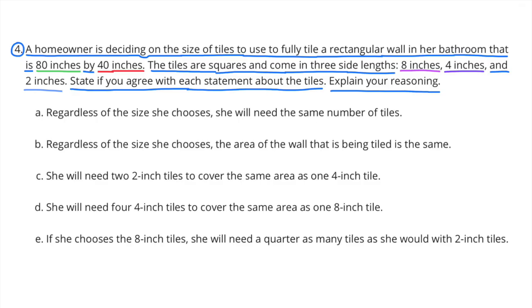Number 4. A homeowner is deciding on the size of tiles to use to fully tile a rectangular wall in her bathroom that is 80 inches by 40 inches. The tiles are squares and come in 3 side lengths: 8 inches, 4 inches, and 2 inches. State if you agree with each statement about the tiles. Explain your reasoning.